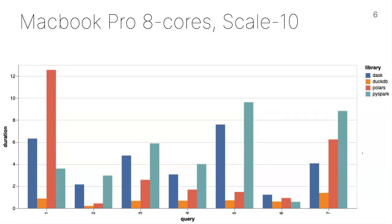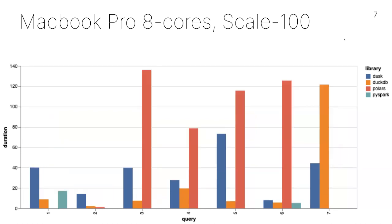Increasing scale from 10 gigabytes to 100 gigabytes on my MacBook Pro: PySpark crashed a bunch — it was designed to run with all the memory of a computer and didn't have access to that. Polars also crashed a couple of times. Dask was kind of slow but always ran. DuckDB is still humming along — it doesn't like Query 7 but otherwise is definitely killing it. Dask actually has the most robustly not-terrible results, which is fun.